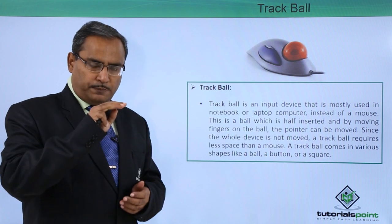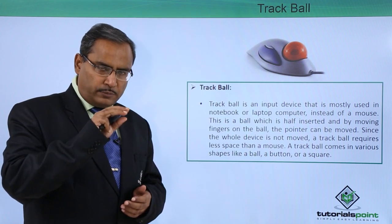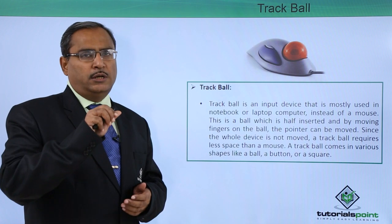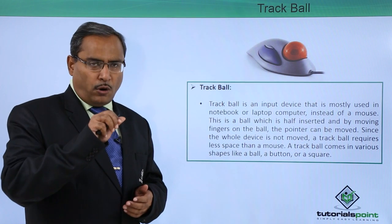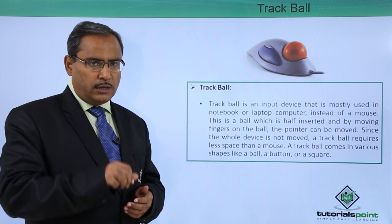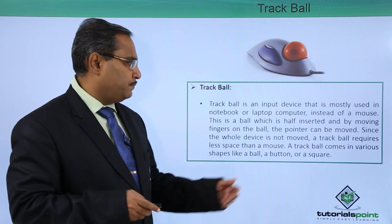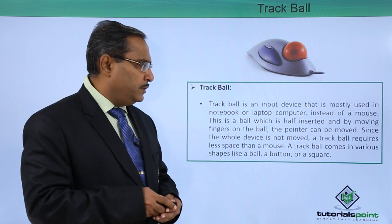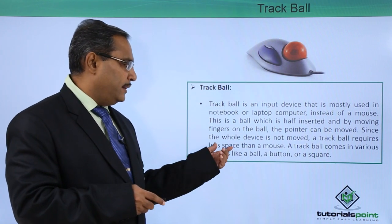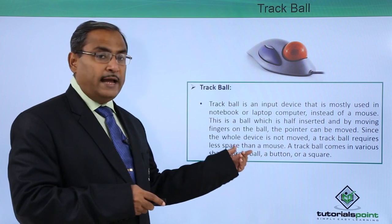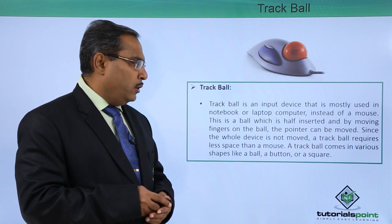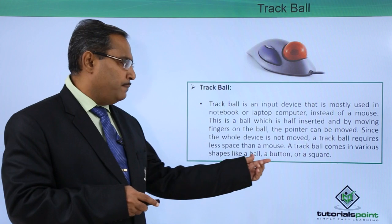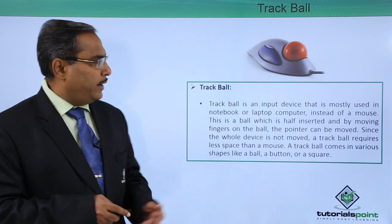There is one ball — the hub — the ball portion is inserted inside and the upper portion is available. Just by rolling that ball using our finger, we can control the pointer position. Since the whole device is not moved, a track ball requires less space than a mouse. A track ball comes in various shapes like a ball, a button, or a square.